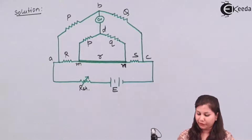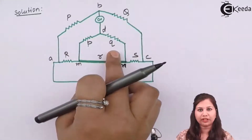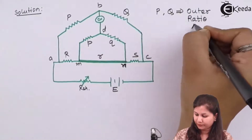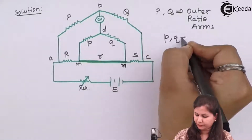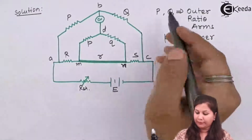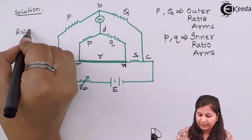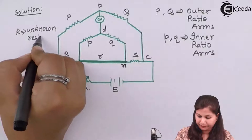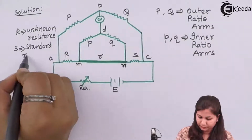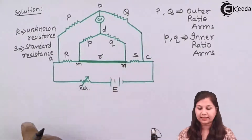This is the circuit for the Kelvin bridge. In this bridge we have four arms. Capital P and capital Q are known as the outer ratio arms, and small p and small q are known as the inner ratio arms. R is the unknown resistance and S is the standard resistance.